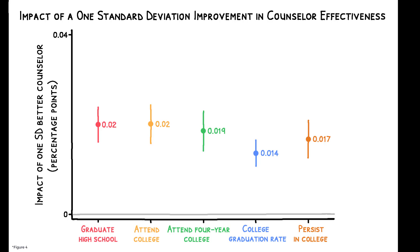Students assigned to higher value-added counselors have better outcomes. Those assigned to a counselor who is one standard deviation above average are 2 percentage points more likely to graduate high school and attend college, 1.7 percentage points more likely to persist between a first and second year of college, and 1.2 percentage points more likely to earn a bachelor's degree.